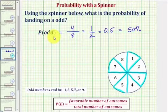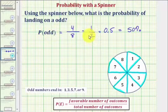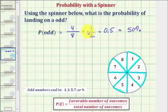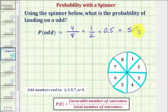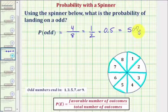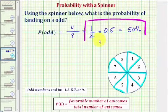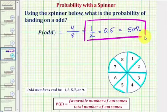So if the probability of spinning an odd is one-half, this means theoretically we expect to land on an odd number one time out of every two spins. Having a probability of fifty percent means we expect to land on an odd fifty percent of the time, or fifty times out of one-hundred spins. I hope you found this helpful.